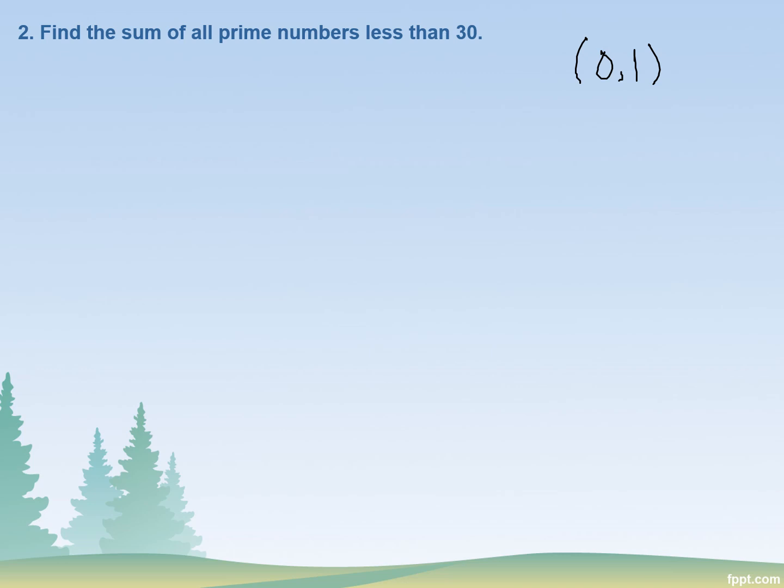So firstly, let's list down all the prime numbers that are less than 30: 2, 3, 5, 7. These are the numbers that are only divisible by themselves and by 1.